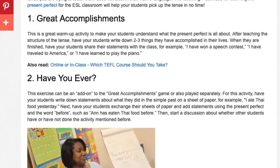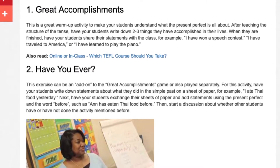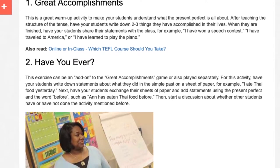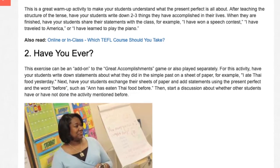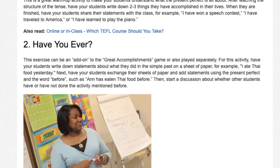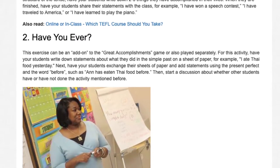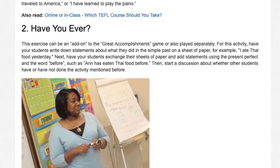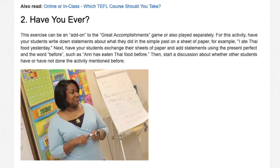2. Have You Ever? This exercise can be an add-on to the Great Accomplishments game or played separately. Have students write down statements about what they did in the simple past, e.g., 'I ate Thai food yesterday.' Next, have students exchange their sheets and add statements using the present perfect and the word 'before,' such as 'Ann has eaten Thai food before.' Then start a discussion about whether other students have or have not done the activity mentioned.